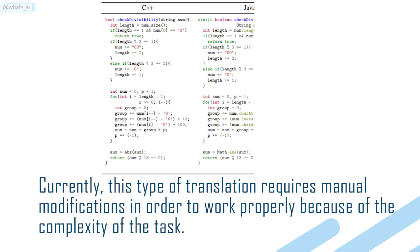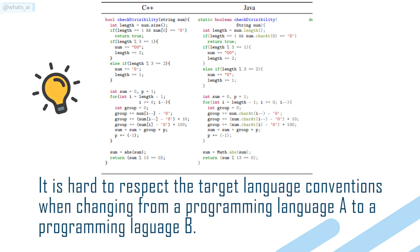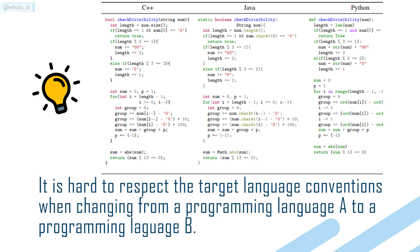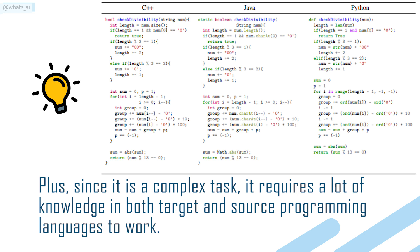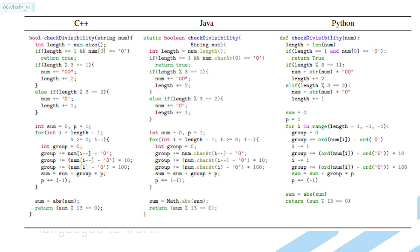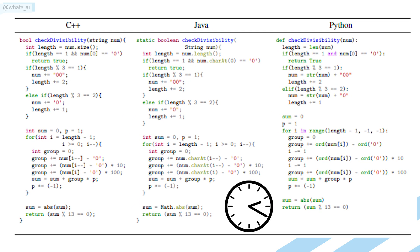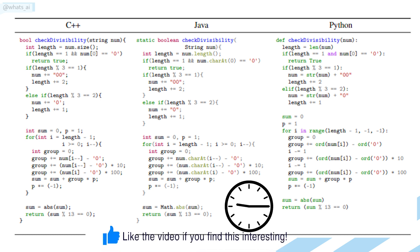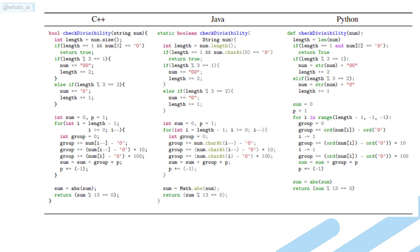Currently, this type of translation requires manual modifications in order to work properly because of the complexity of the task. It is hard to respect the target language conventions when changing from programming language A to language B. Since it is a complex task, it requires a lot of knowledge in both target and source programming languages, meaning a lot of examples and computation time. This is why Facebook tried a new approach using unsupervised machine translation to train a fully unsupervised neural transcompiler.